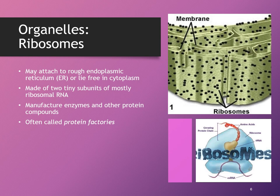Ribosomes are made up of two tiny subunits and are mostly composed of ribosomal RNA. They are used to manufacture proteins — those polypeptide chains that we talked about in our chemistry chapter.